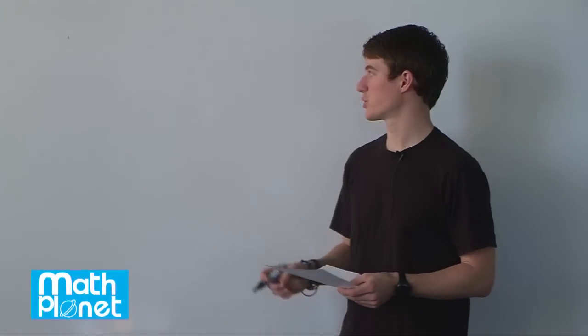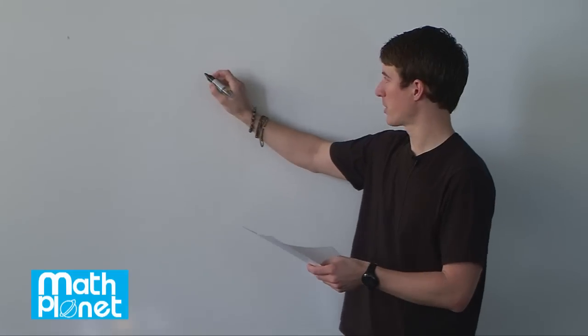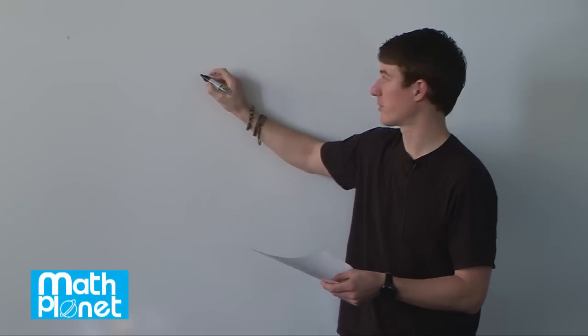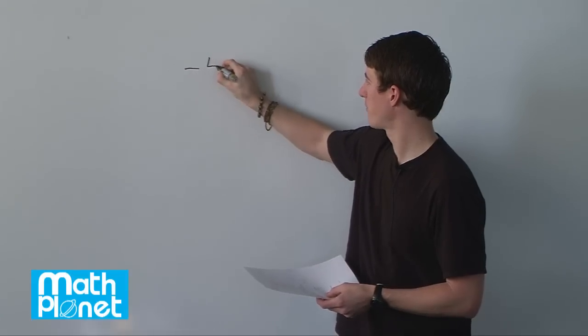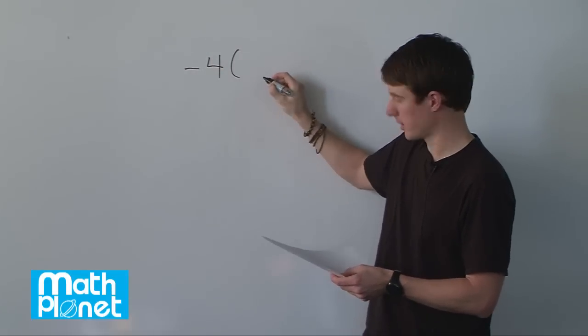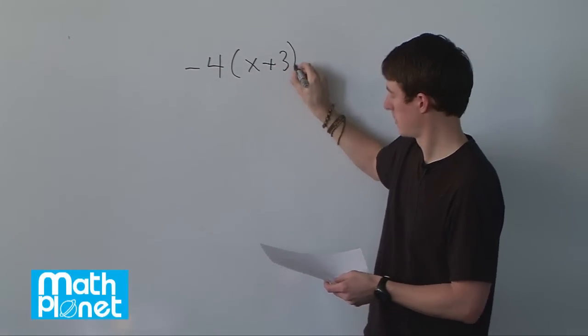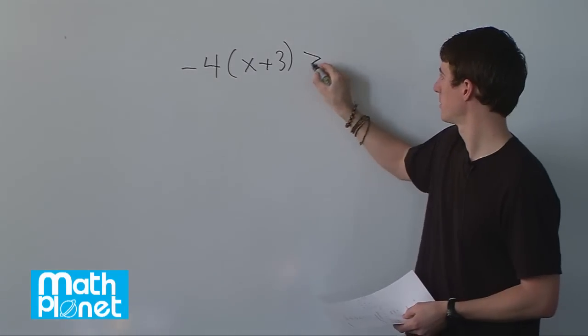Here we have an inequality, an algebraic inequality, and we want to solve and see what solutions we have for that. So we start with negative 4 times the quantity x plus 3 is greater than 24.